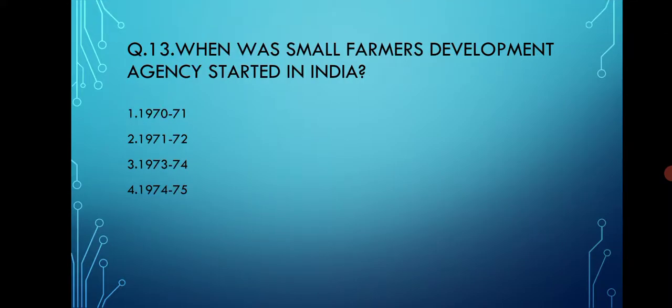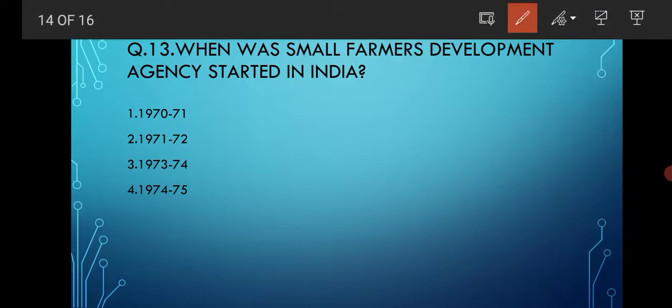When was the Small Farmers Development Agency started in India? Options are 1970–71, 1971–72, 1973–74, and 1974–75. The correct option is option number one, that is 1970–71.